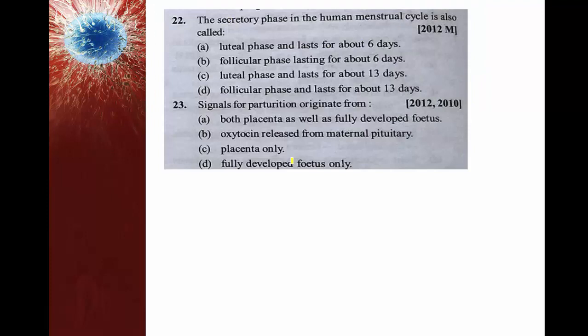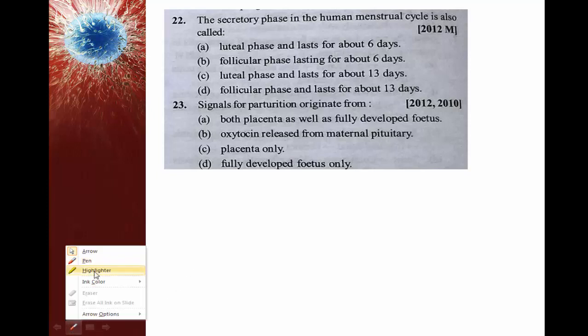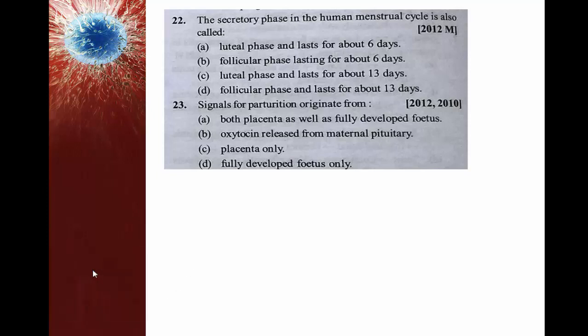The secretory phase in the human menstrual cycle is also called the luteal phase. After ovulation, the corpus luteum forms and continuously secretes progesterone, which is why this phase is called the secretory phase. It is also called the luteal phase and lasts for about 13 days in the menstrual cycle.